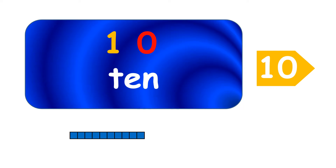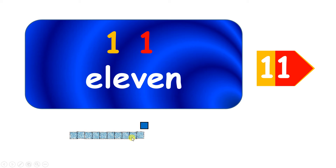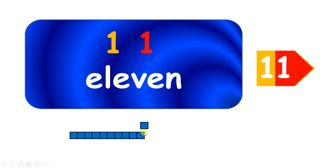So after ten we have eleven. Now that's written with two digits — it's written with the digits one, one. And the reason for that is that if we push ten of these blocks together to make a line of ten, that first one, the one in yellow, tells us that we've made one line, and then the next one tells us that we've got one left over.